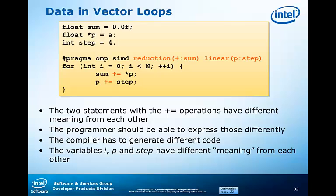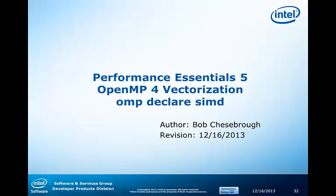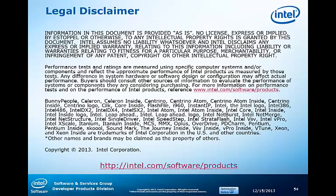Now we'll look at the corrected code. Here we are explicitly calling sum out to be a reduction variable on the plus operator, and we call the variable p out to be an induction variable with stride step. Now the compiler has explicit information about how the developer intended this application to behave. This concludes our fourth video. Please take a few minutes to watch our next video in the series, Performance Essentials 5, where we begin our exploration of OMP declare SIMD. We'll see you in the next video.